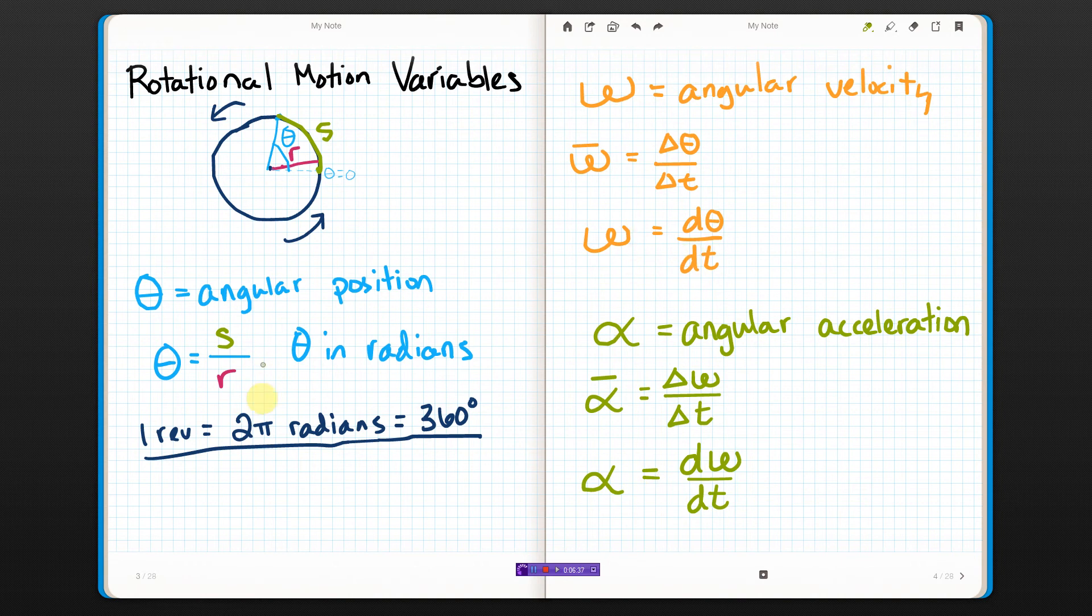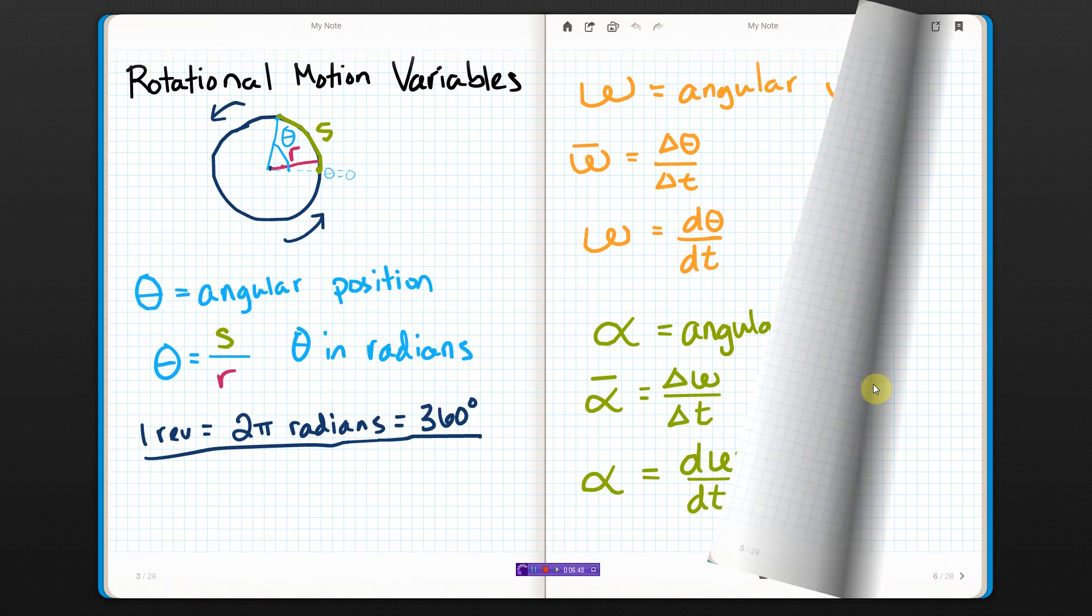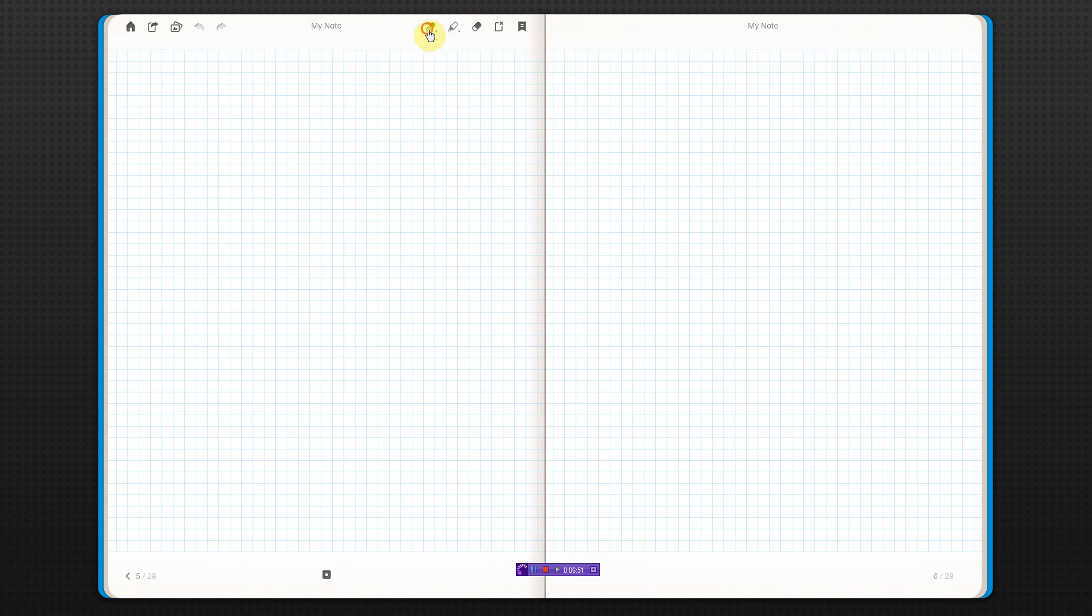Those are really all of the variables, and they all act exactly the same way as the kinematics equations that you're used to. So I'm going to rewrite those equations. You remember these, you know these. Position equals initial position plus initial velocity times time plus one half acceleration times time squared.